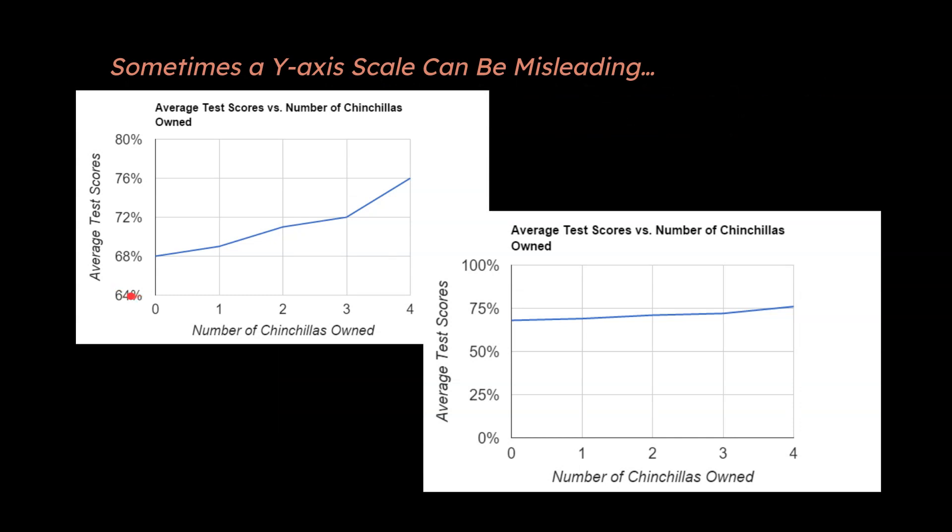Sometimes people will have a break in the Y axis. They will start at not zero in the Y axis or they'll start at zero and then they'll have a line that's a break. That's okay and that is acceptable in a lot of cases to do. But notice it can skew data if you do that. It's almost like zooming in in the Y axis when you do that. So for instance, if we were to plot the number of chinchillas owned and the average test scores for certain students,